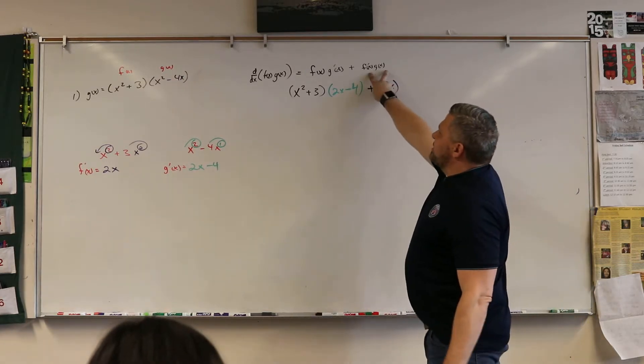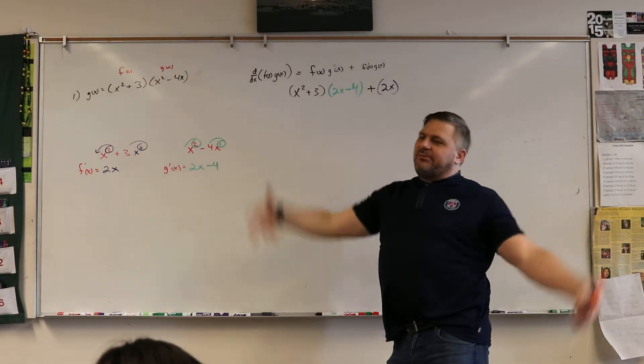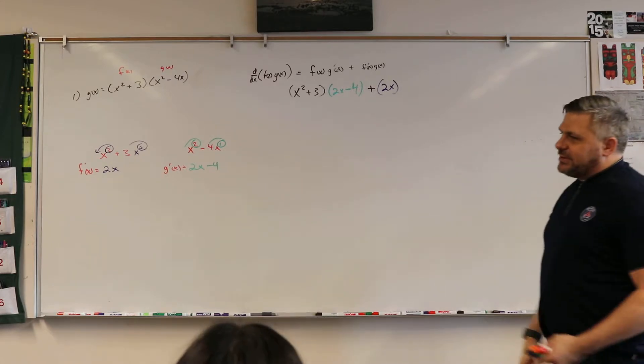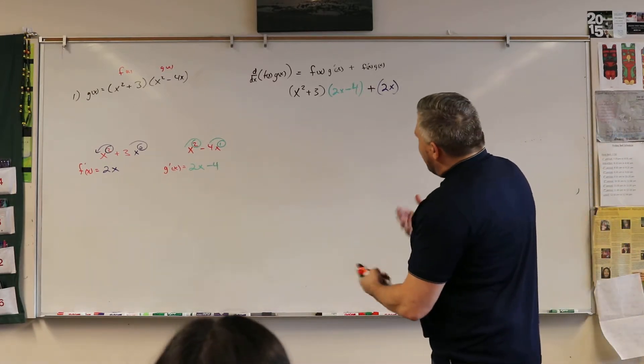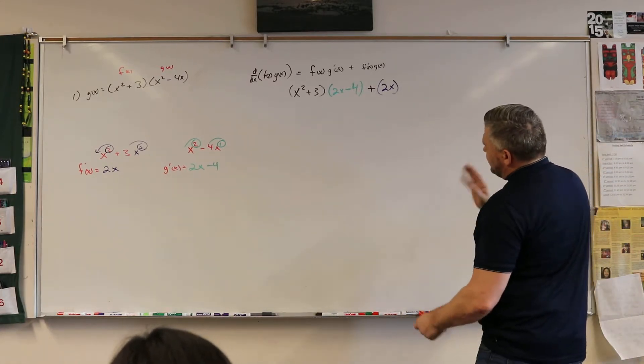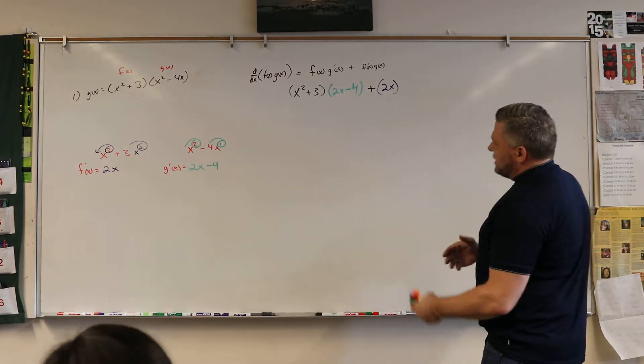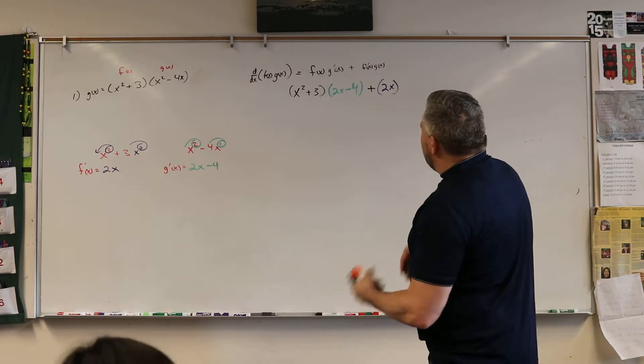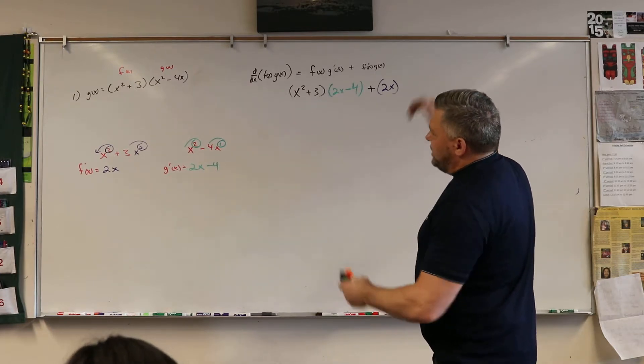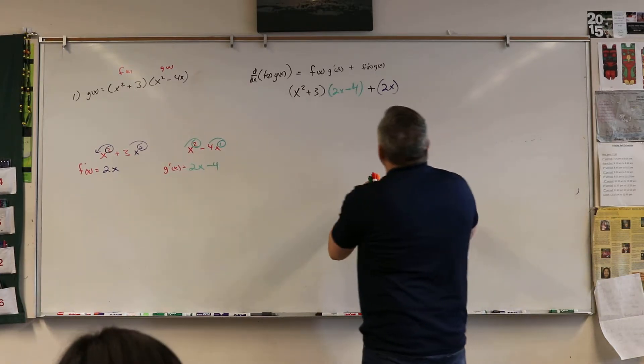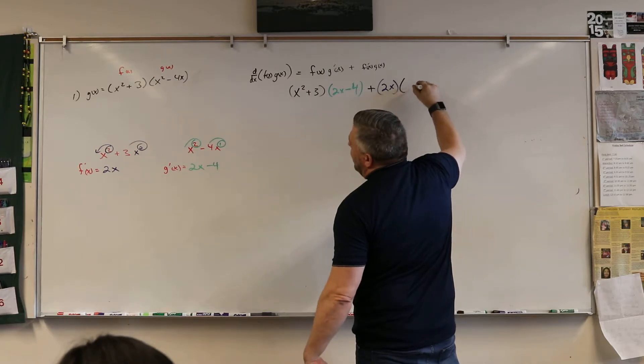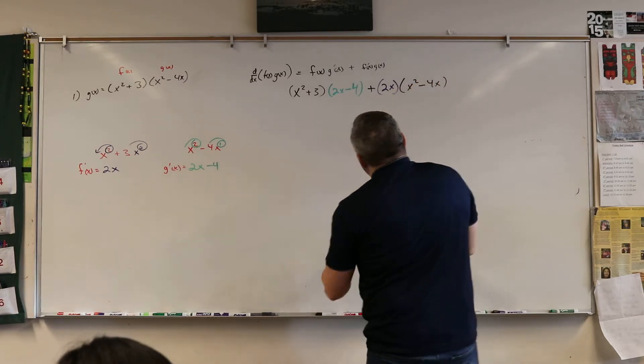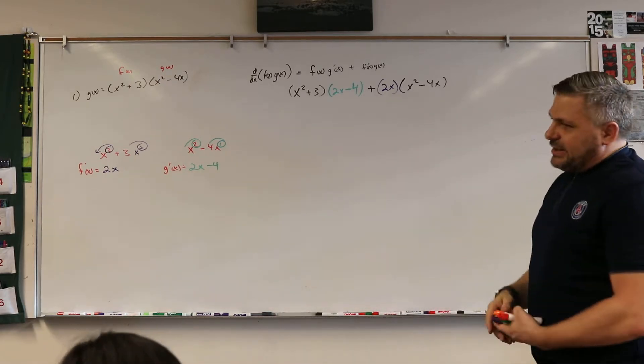Times g of x. Now I did change this. In the book it says g of x times f prime of x. But it doesn't matter which order. 3 times 2 is the same as 2 times 3. So I just kind of like to keep it as f of x, g of x, f of x, g of x. That's my rhythm. And then it's going to be multiplying by the normal g of x. So that's the one that's up there that says x squared minus 4x. And so now we're going to multiply these.